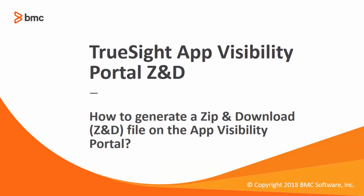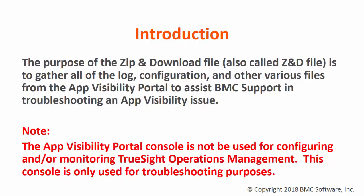This video demonstrates how to generate a zip and download file on the app visibility portal. The purpose of the zip and download file, also called ZND file, is to gather all of the log, configuration, and other various files from the app visibility portal to assist BMC support in troubleshooting an app visibility issue.